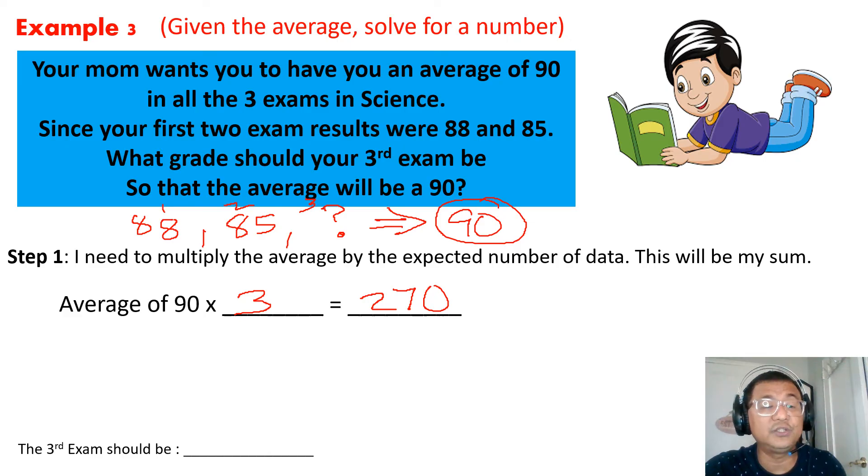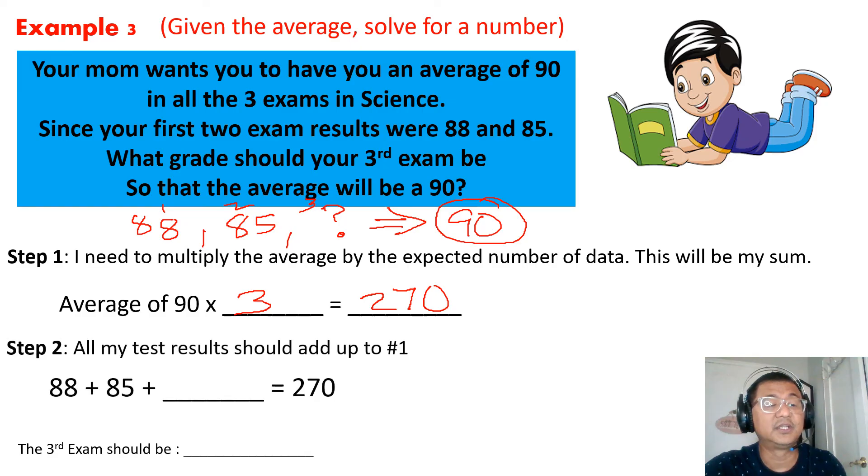Meaning, all these three should add up to 270. Therefore, if all these three should add up to 270, I just need to find this missing number. You could use your algebra or just do it mentally. Add these two, you have 173. And to find the missing number, 270 minus 173 and I will get 97. So your expected grade in the third exam is 97.